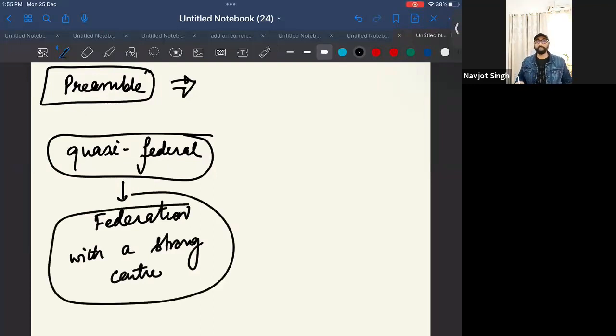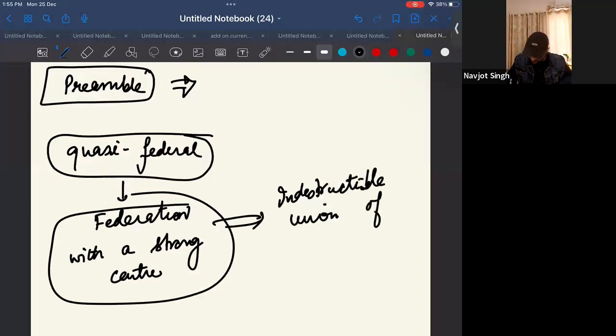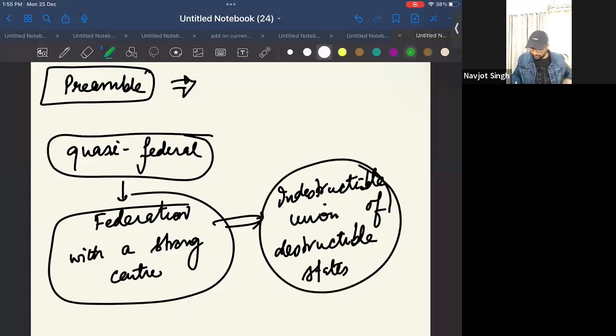So, federal system would be one which is like complete devolution of power like we have in Canada, which is a strong federal system but we are an indestructible union of destructible states. Though our union cannot be destroyed, our states are destructible. So, that makes us with a strong center. That only means what we have a quasi-federal, we are not completely federal. Although we have a distribution of powers between center and states. We have the three lists.